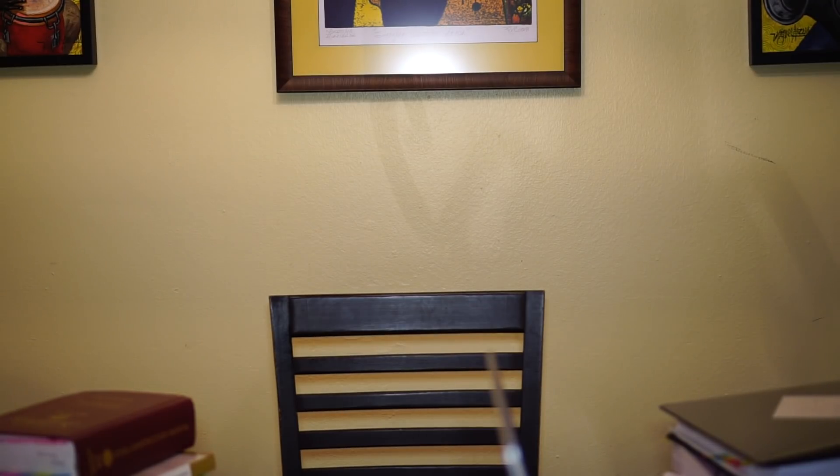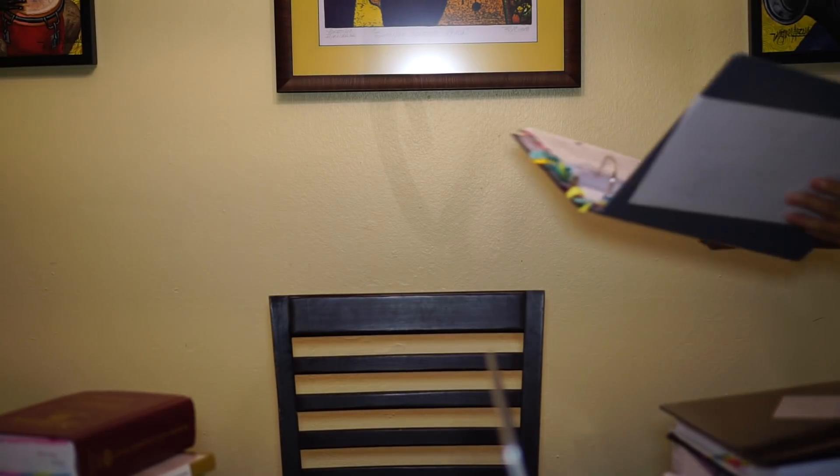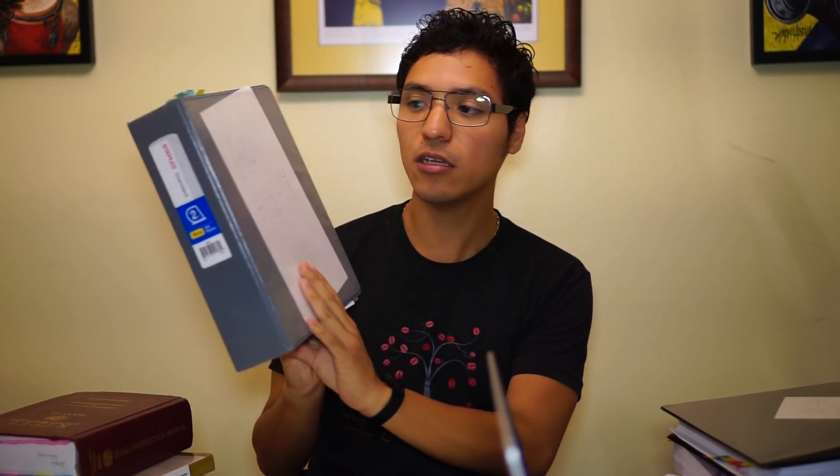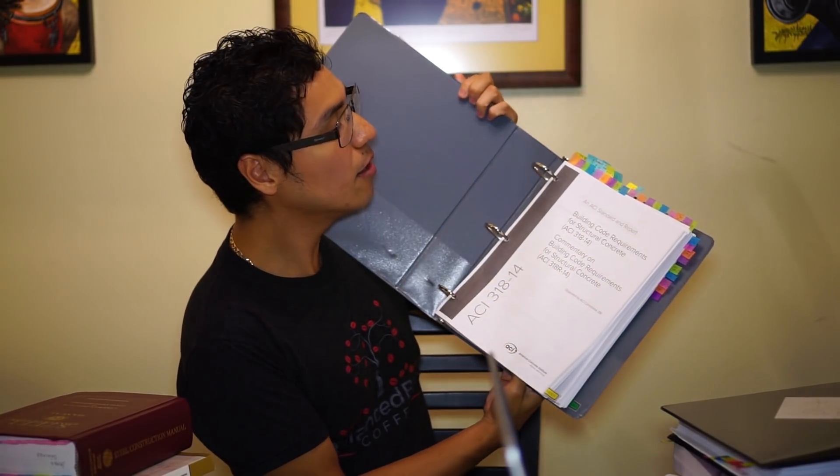ACI 318 is the concrete code — building code requirements for concrete. I didn't want to pay for this book so I just printed it out; we have it at the office. It's ACI 318-14. As you can see, I've already started tabbing all the chapters and material I'll need. You will need this book for sure — it's a very important book.